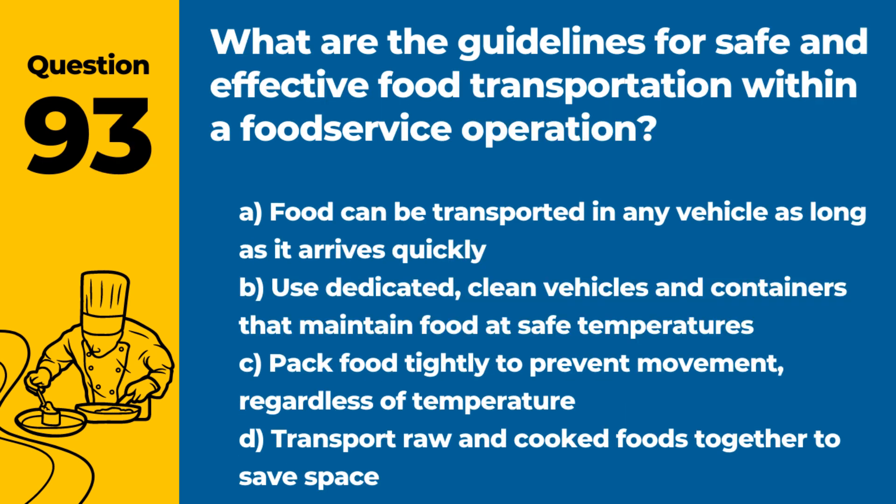Question 93. What are the guidelines for safe and effective food transportation within a food service operation? Answer: B. Use dedicated, clean vehicles and containers that maintain food at safe temperatures. Proper transportation practices prevent contamination and temperature abuse.